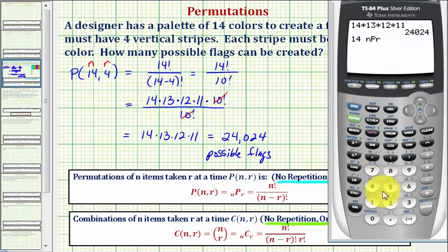And now we enter R, which is four, and enter. But we should also be able to evaluate a permutation by hand, as shown here.